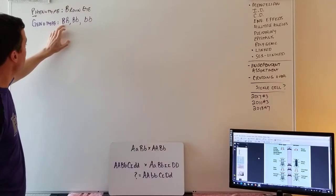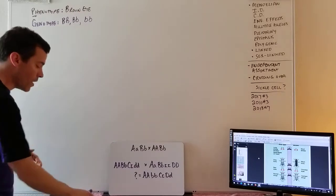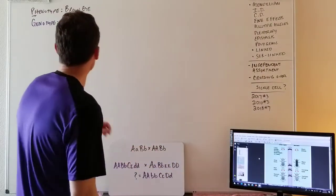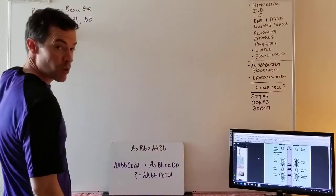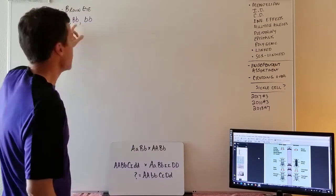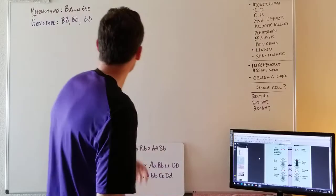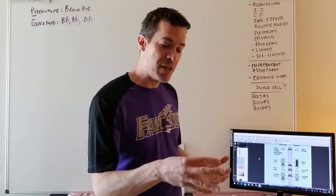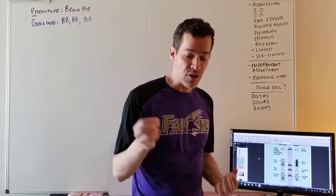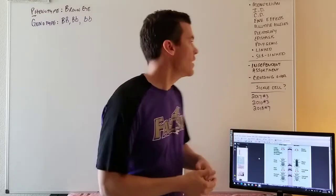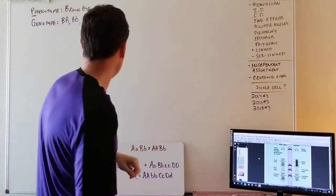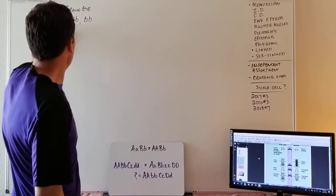Think of it like a recipe for frosting: one gene says 'add brown pigment,' another says the same. If both are working, the frosting is brown. If one is broken, you still get brown. If both are broken, you get white frosting by default — same with eyes. I have genes that say 'add brown pigment.' With one working copy I get brown eyes; with none I get blue eyes.